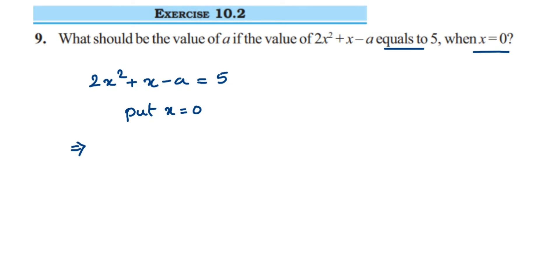So this will be equal to 2(0)² + 0 - a = 5. So 2 times 0 squared will become 0, then plus 0 minus a is equal to 5. So 0 will not have any value. 0 plus 0 minus a will be equal to minus a.